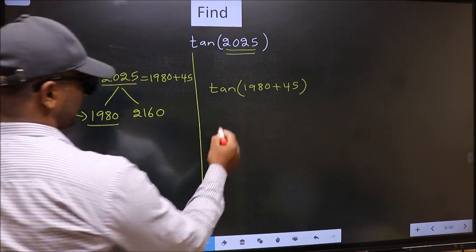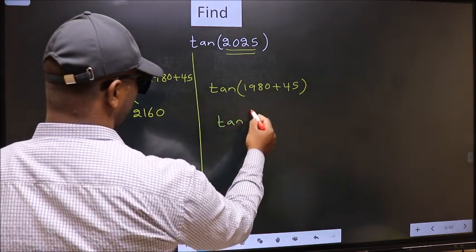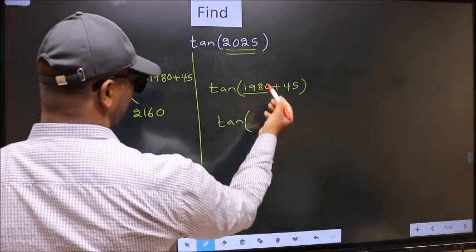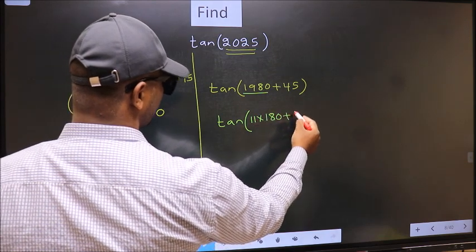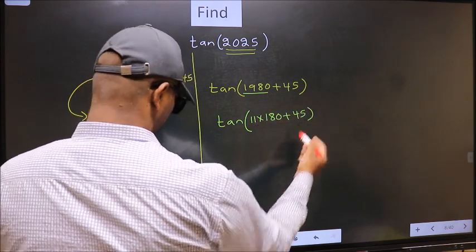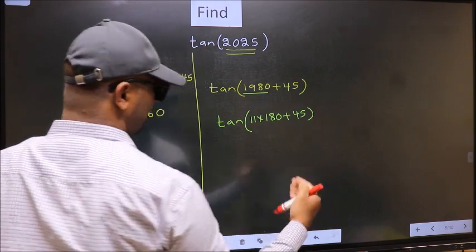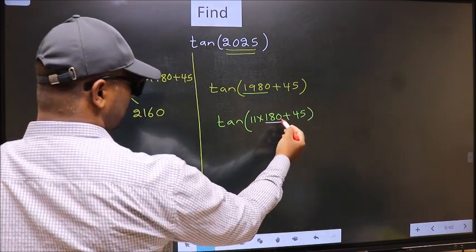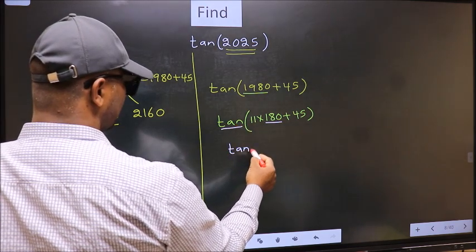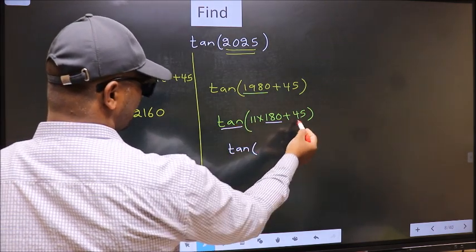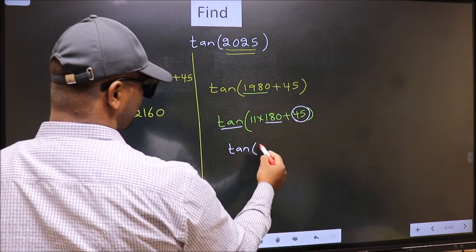Next, tan. In place of this, now we should write 11 × 180 plus 45. Here we have 180, so tan is not going to change. It will remain tan. And inside, we get this angle 45.